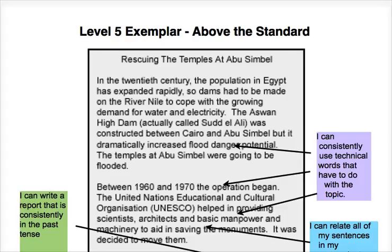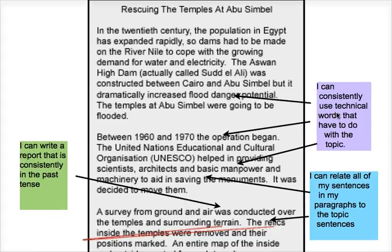The first one is they can consistently use technical words to do with the topic. How this compares to the Level 4 one is the Level 4 will use some, while the Level 5 one will be weaved in throughout the text.